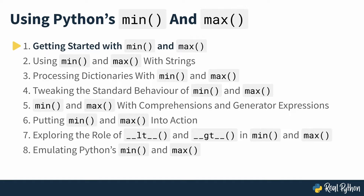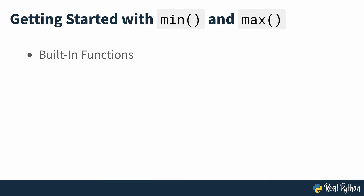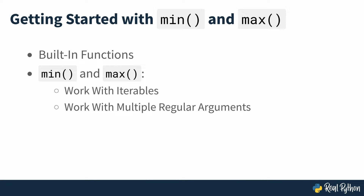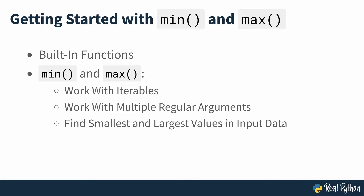So now you know what's going to be covered, let's get started. Python includes several built-in functions that make your life more pleasant and productive — they mean you don't need to reinvent the wheel. Two such functions are min and max. They mostly apply to iterables, but you can use them with multiple regular arguments as well. As their names suggest, they take care of finding the smallest and largest values in input data.